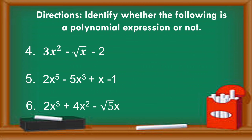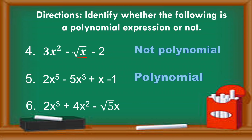For numbers 4, 5, and 6: number 4 is not polynomial — bawal sa loob ng radical ang variable, yan yung pang-apat na kondisyon. Number 5 is polynomial — walang negative na exponent, walang variable sa denominator, wala din sya sa loob ng radical symbol. Number 6 is also polynomial — wala sa loob ng radical ang variable, kaya sya pa rin ay polynomial. That is how we can identify whether it is a polynomial expression, which is also related with polynomial function.